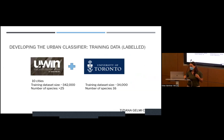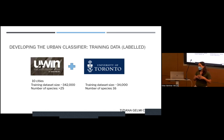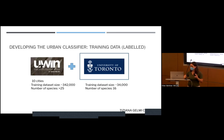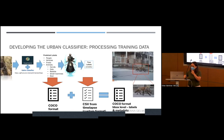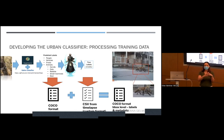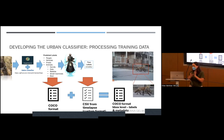The data I came with was the Toronto data and the UIN data, which covers 10 cities — there are 41 cities total, and hopefully we can expand later. For the model I used the University of Toronto data. The first thing we needed to do was clean that data. We had the true labels classified with the oracle, and we had the COCO format with bounding boxes, and we had the CSV from Timelapse that had no bounding boxes but had the true labels. I needed to combine these two, and that's where I spent most of my time.